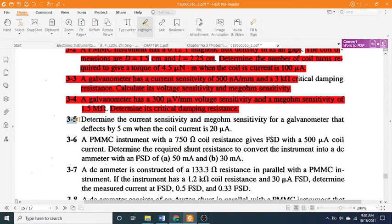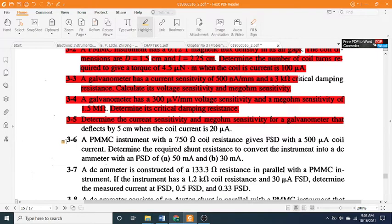3-5: Determine the current sensitivity and megaohm sensitivity for a galvanometer that deflects by 5 cm when the coil current is 20 μA.